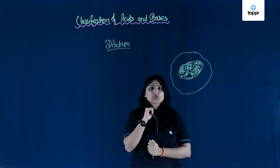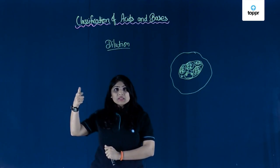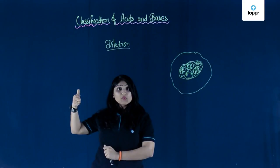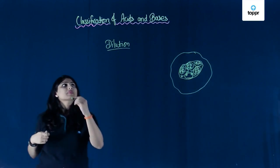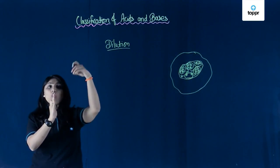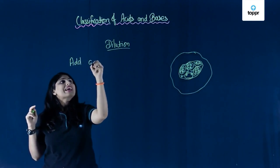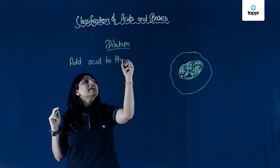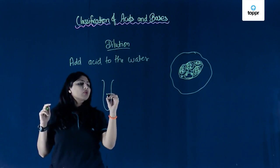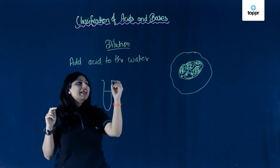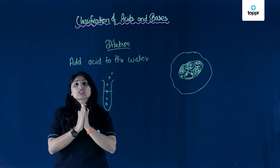What is the procedure of dilution? Can we take acid and just add water to it? No — the beaker or test tube will just splash or blast out. Always remember, we cannot add water to acid. Instead, we should always add acid to water while diluting. Suppose in this test tube I have water, and I add acid drop by drop.